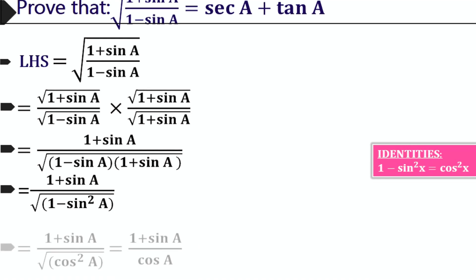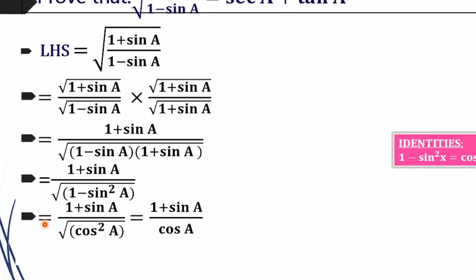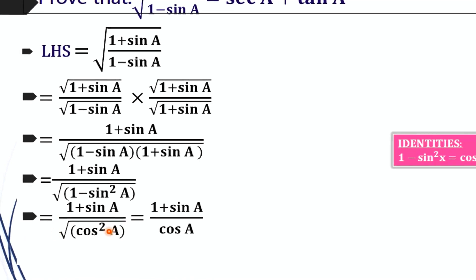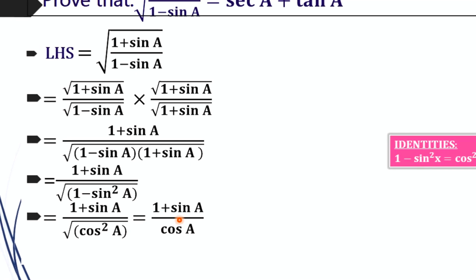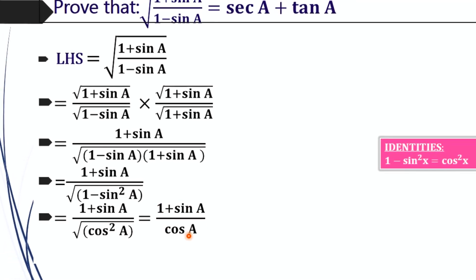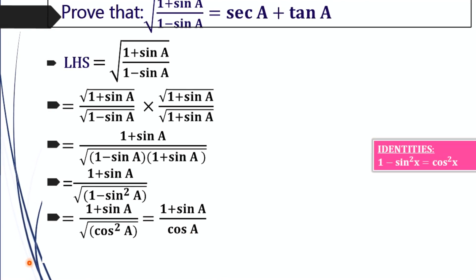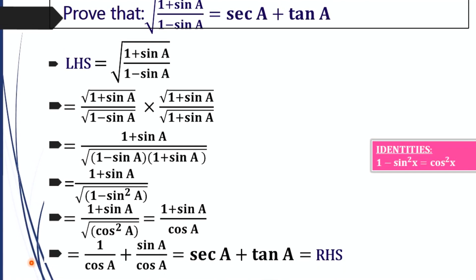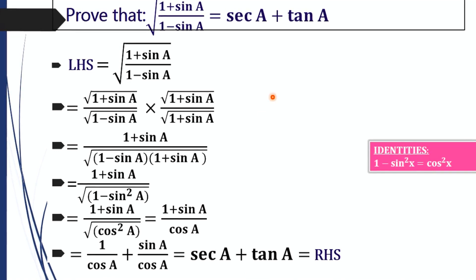Square root of (1 plus sin A) divided by square root of cos squared A gives (1 plus sin A) divided by cos A. This equals 1 over cos A plus sin A over cos A, which gives our RHS: sec A plus tan A.